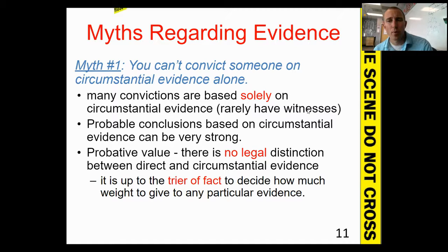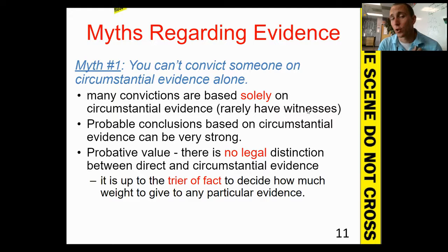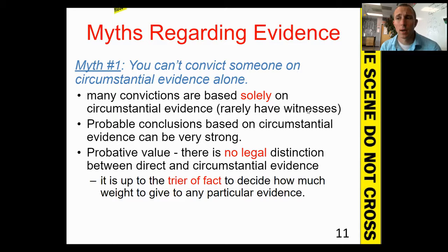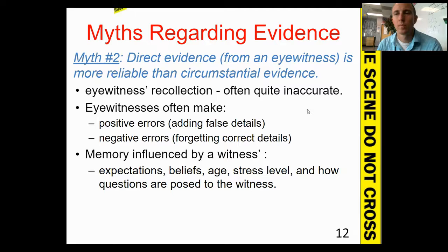There are a couple of big myths to address. The first myth is that you can't convict someone just on circumstantial evidence — that is not true. You can absolutely convict someone based solely on circumstantial evidence. Oftentimes there's no eyewitness or clear-cut direct evidence linking someone to a crime. We need to make the best probable conclusions we can, and there is no legal distinction between direct and circumstantial evidence — it's up to the trier of fact to determine how much weight to give each piece.